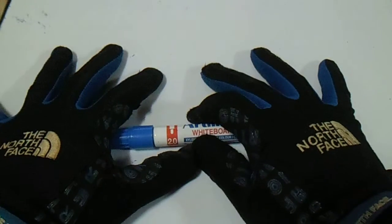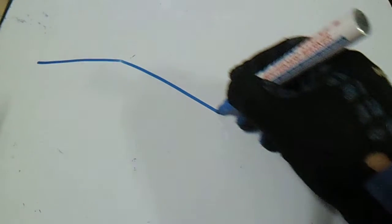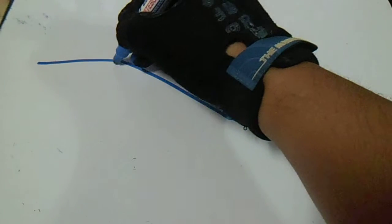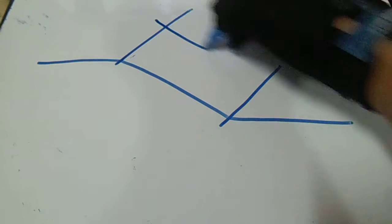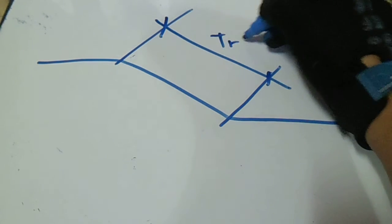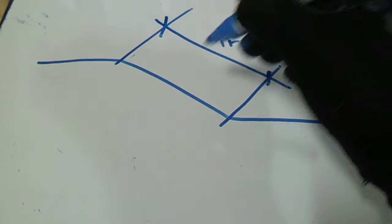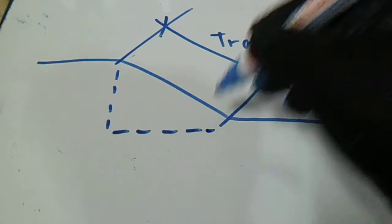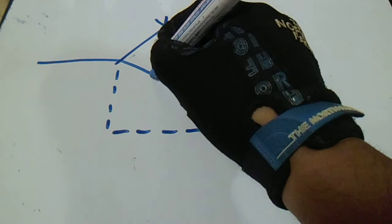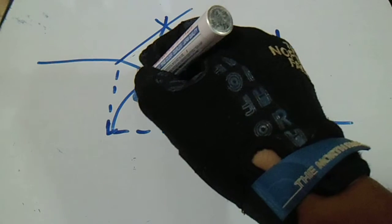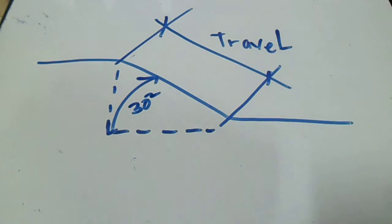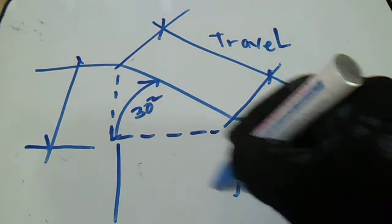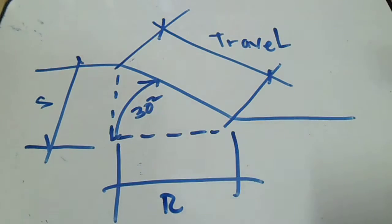Hello guys, welcome to Piping, Welding and NDT channel. We have a computation for this travel, and we have a hidden line here. Let's say we have 30 degrees here. This is the run and set.